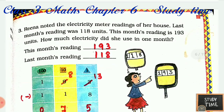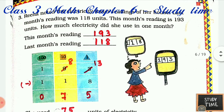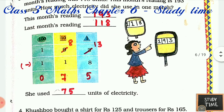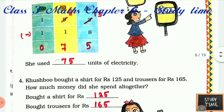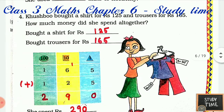Rina noted the electricity meter readings of her house. Last month reading was 118 and this month reading is 193. How much electricity did she use in one month? You subtract 193 minus 118, and she used 75 units of electricity.